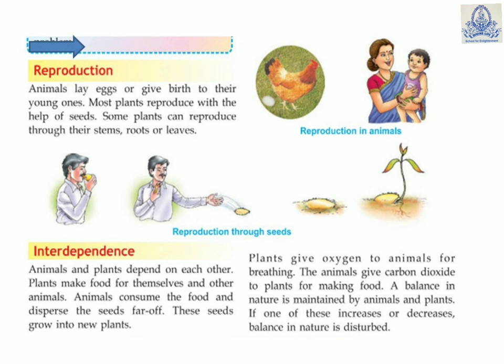Now, reproduction: animals lay eggs or give birth to their young ones. Most plants reproduce with the help of seeds. Some plants can also reproduce through their stems, roots, or leaves.